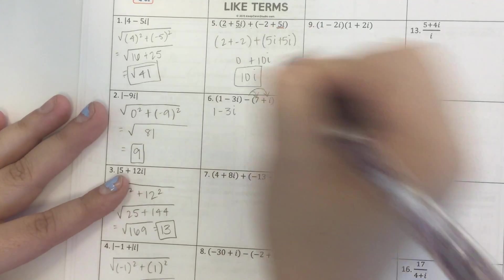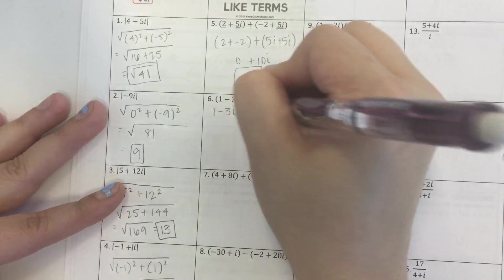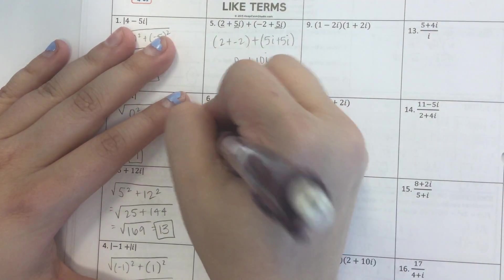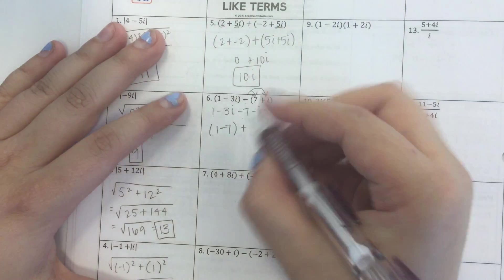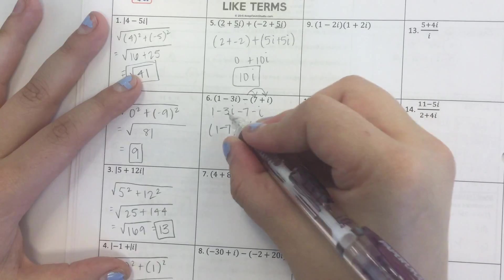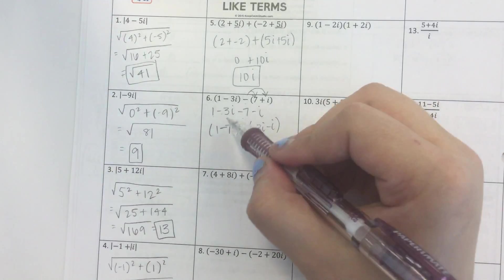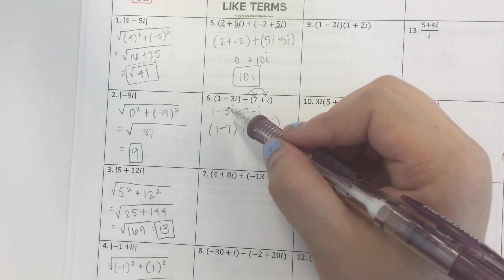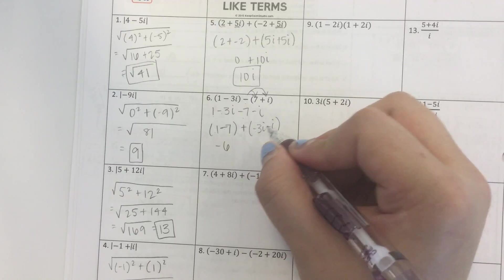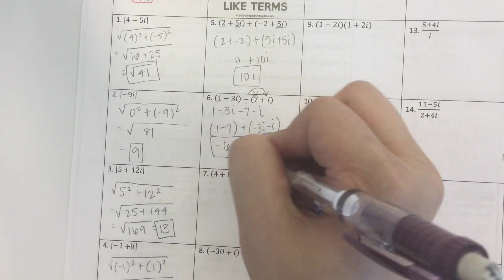1 minus 3i minus 7 minus i. Now I can combine like terms. I have 1 minus 7, and I can write a plus sign here because I distributed, so we're all good. Negative 3i minus i. It's negative 3i because this minus sign is in front of the 3i. So 1 minus 7 is negative 6. Negative 3i minus i is negative 4i, and we're done.